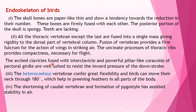The fused clavicles with the interclavicles and powerful pillar-like coracoids of the pectoral girdle are well suited to resist the inward pressure of the downstroke. The heterocoelous vertebrae give great flexibility, enabling birds to move their neck about 180 degrees, helping in preening feathers on all parts of the body. The shortening of the caudal vertebrae and the formation of the pygostyle assist stability in air.